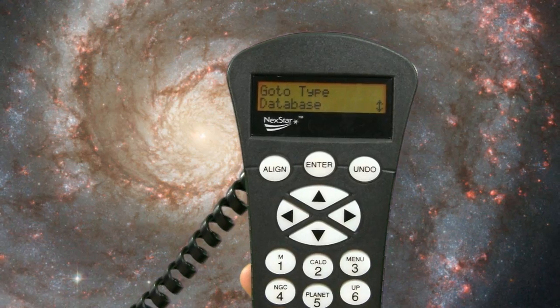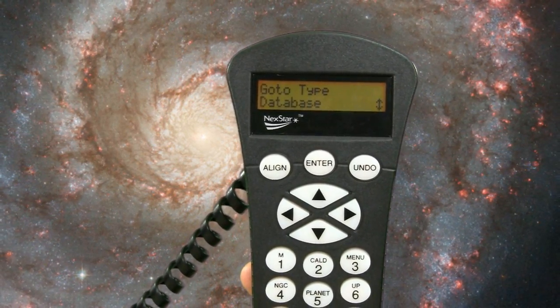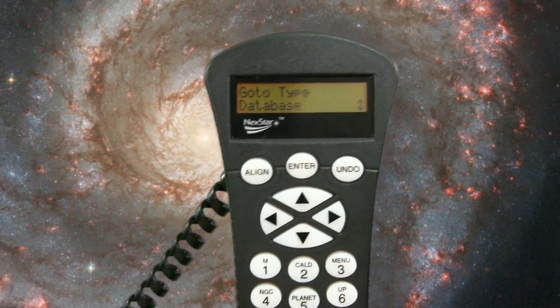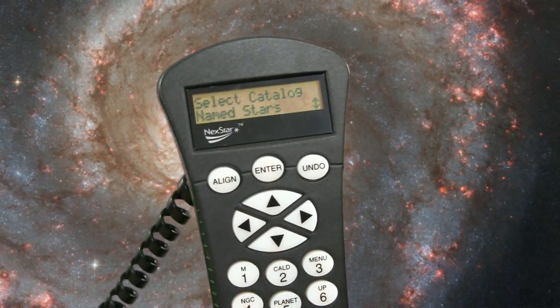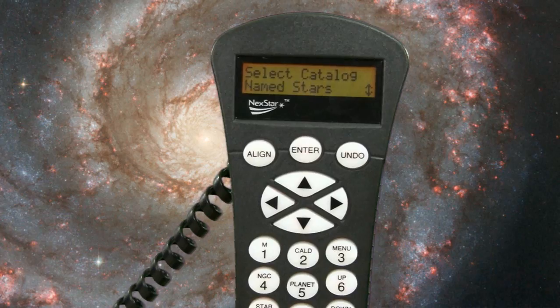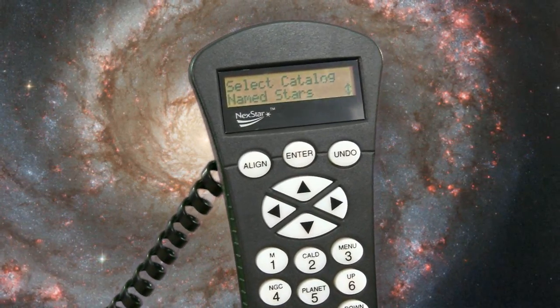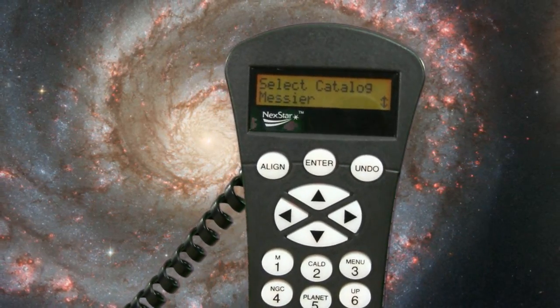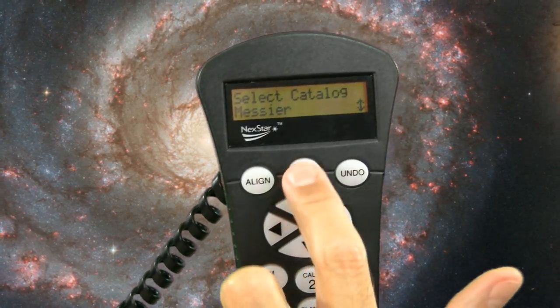RA Deck would be used when we wanted to find something not in the database, such as a comet. You will almost always choose Database. Then it says Select Catalog. Some of our choices are named stars, named objects, Messier. We want M51, so we choose Messier.